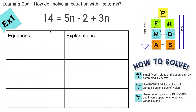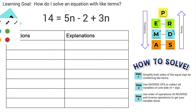Sometimes you can figure these out in your head, and that's awesome, but out in the real world the answers are usually messy, so you need a system. Step one: simplify both sides of the equal sign by combining like terms. Sometimes we're able to do that, and sometimes we're not. I'm going to go ahead and begin with the first step, which is to combine like terms.